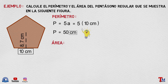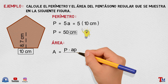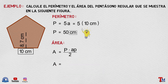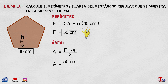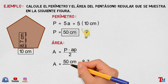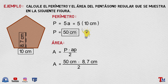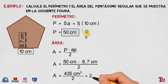Calculemos el área del pentágono regular. En función del perímetro y la apotema, sería igual a P multiplicado por la apotema sobre 2. Reemplazando, el área va a ser igual al valor del perímetro — que en este caso es 50 centímetros — multiplicado por el valor de la apotema, que es 8,7 centímetros, dividido para 2. En el siguiente paso, resolvemos la multiplicación del numerador: esto da 435 centímetros al cuadrado dividido para 2. Resolviendo la división, el área del pentágono regular va a ser igual a 217,5 centímetros al cuadrado.